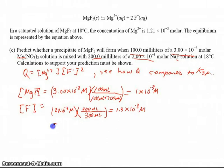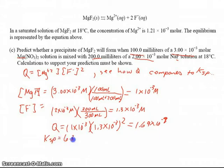And so now, all I have to do is find my Q. So in this case, we said Q is equal to Mg2+, which is 1 times 10 to the minus 3, times F minus, which we said was 1.3 times 10 to the minus 3. And the F minus quantity needs to be squared. And so when I do this work, I see that I get 1.69 times 10 to the minus 9th for Q. And we know that Ksp, from previous calculations, is going to be 6.3 times 10 to the minus 7th.